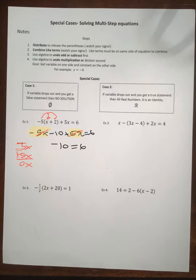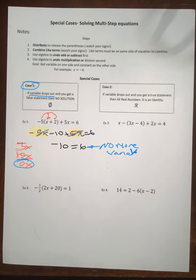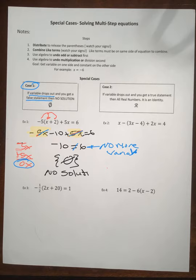So what happens is, case number 1: if you have a variable that drops out — we don't have a variable anymore, the variable's gone — because a negative 5X and a positive 5X gives you no X's, so we just have constants. When that happens and you get a false statement — negative 10 is not equal to 6 — that means it's a no-solution situation.